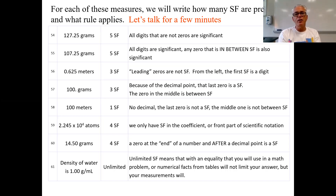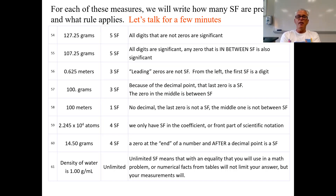In number 55, there's a zero in there. Maybe you measure 107.25 grams. There are also five significant figures because one of the rules about zeros is: if you have a zero in the middle, you can't omit it. If you took that zero out you'd have a different number — 17.25. The zero means there are no tens. So if the zero is between significant figures, it's also significant.